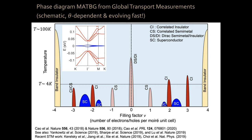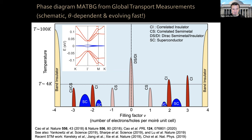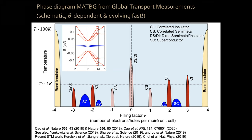Q: What about superconductivity between filling factors zero and one, or zero and minus one? A: There have been, in total, about 35 to 40 superconducting devices published in the literature — about 20 from my group. There have been only one or a couple of reports of superconducting domes in the inner region between zero and one or zero and minus one. Those are very rare, and we're still not sure why and when such devices happen — it's the least frequent of the observations.